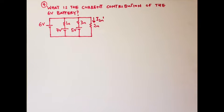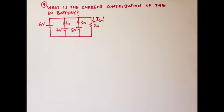We are being asked to find the current contribution of the six volt battery. What this primarily means is that we want to use superposition theorem to find the current flowing through the two ohm resistor, specifically the current flowing through the two ohm resistor when the six volt is acting alone.